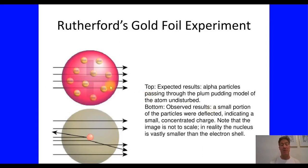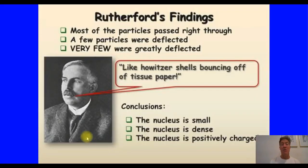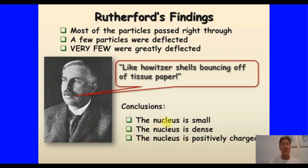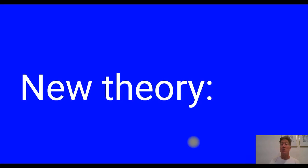Rutherford described it like a howitzer shell bouncing off a piece of tissue paper — as unexpected as if you fired a cannon at toilet paper and somehow the cannonball would bounce back. He had to say Thompson's model of the plum pudding is wrong. The nucleus must be small, it must be very, very dense, and it must be positively charged. Because only that could account for how that fast-moving, positively charged alpha particle could bang into it and bounce at such wild angles.